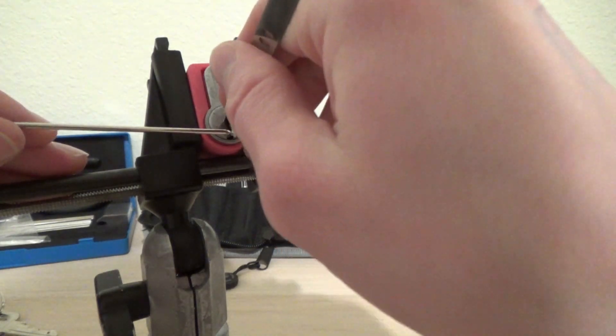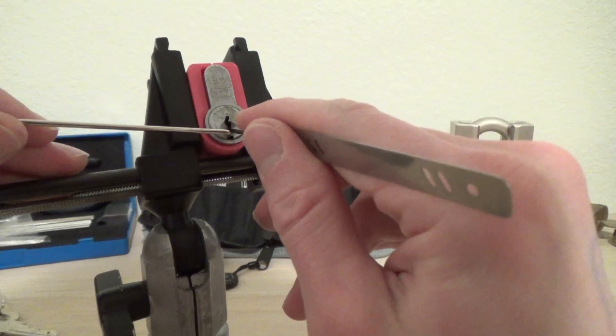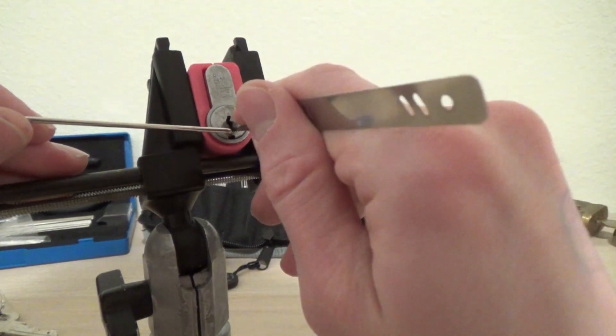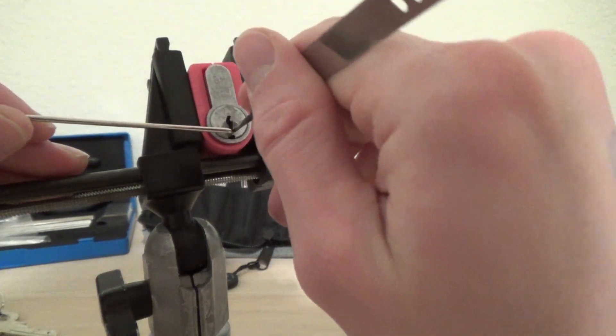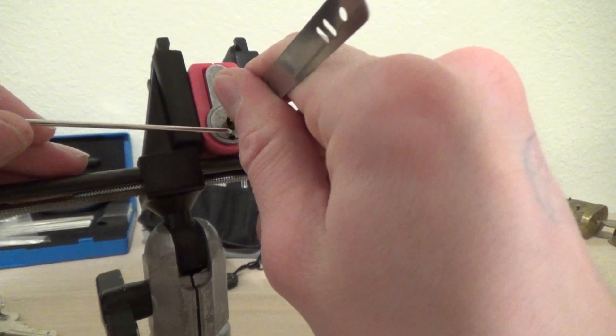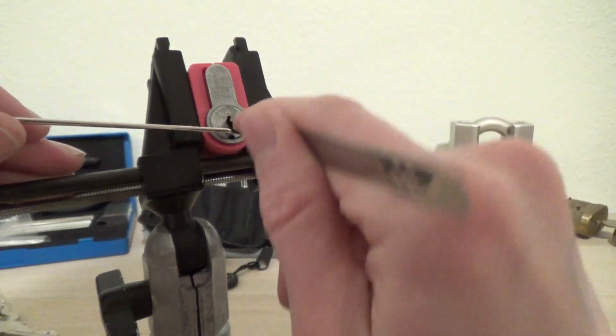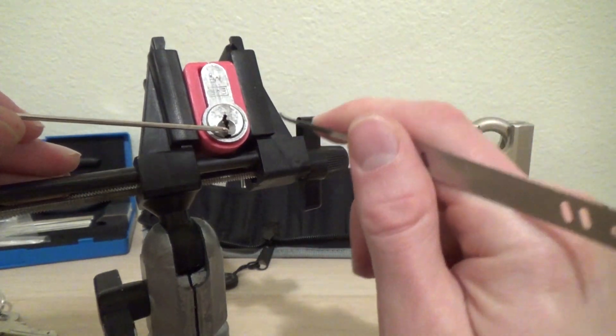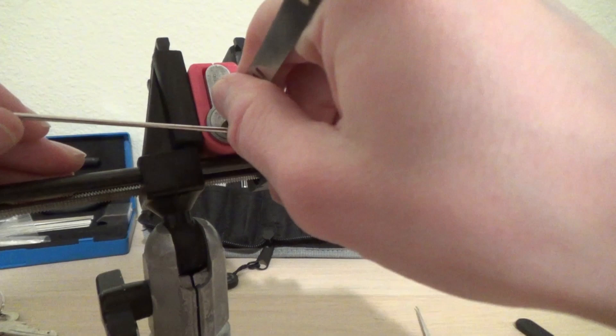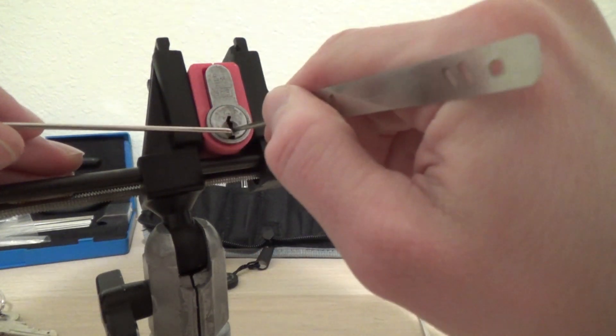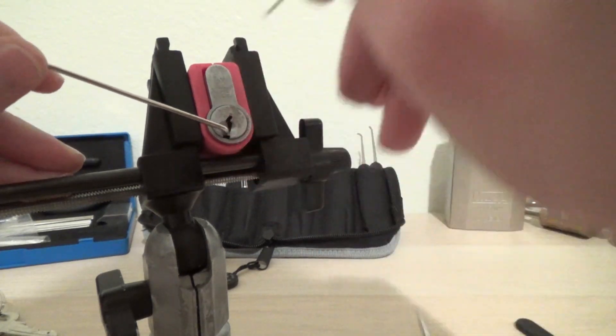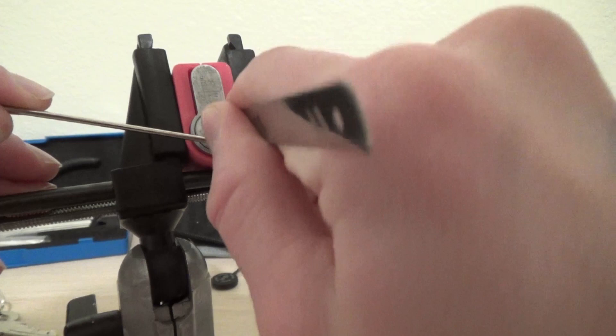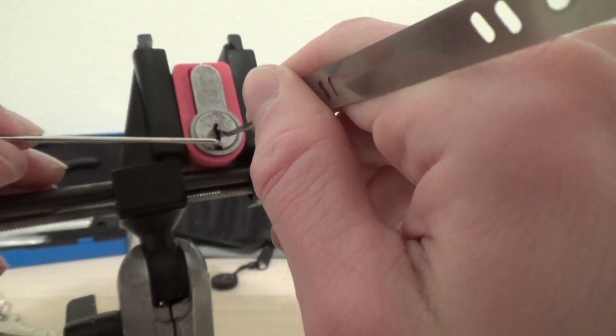We're going to reset, we're going to try again. Getting a lot of crunching from this lock but not an open. Ooh, deep false set, okay. So that should mean I'm close. That wasn't it.